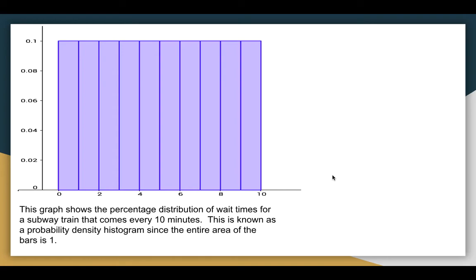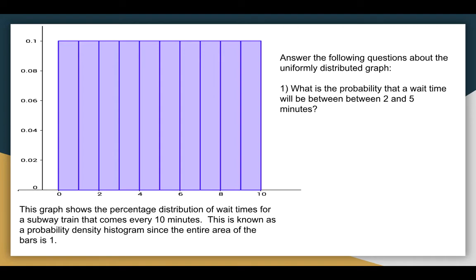What makes the probability density graph useful versus a histogram is the area adds to 1, so 100%. And it's most easily seen in uniform distributed data. So what we have here is the intervals from 0 to 10, 0, 1, 1, 2. And every area you can see is 10%. Base times height is 1 times 0.1 is 10%. And the area of the whole thing is 10 times 0.1, which is 1. So we can answer a whole bunch of questions just from the area.